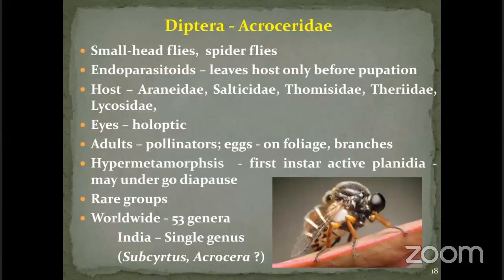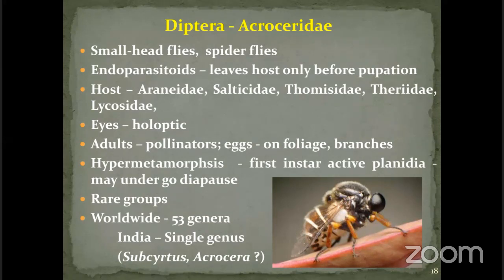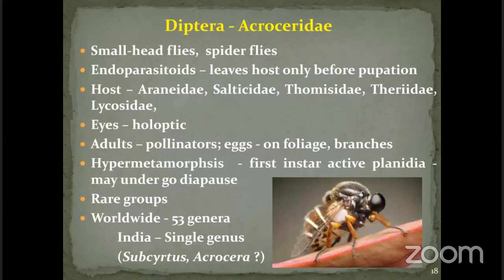Acroceridae have holoptic eyes — the compound eyes are closer to each other, occupying the entire head. Adult flies of these groups are pollinators like other true flies. Eggs are laid on foliage or branches of plants. Like Mantispidae larvae, the first instar larvae are active planidia — they wander to find the host. Once a host spider comes near, they grab it and enter the abdomen of the spider, developing internally inside the spider. These are very rare groups, easily overlooked because they develop internally.